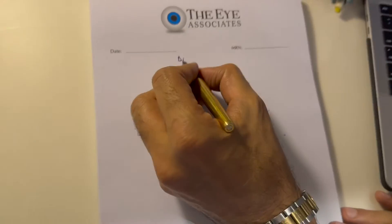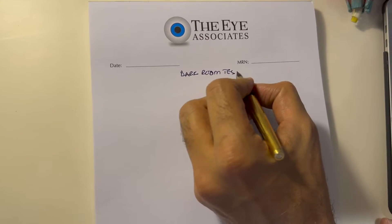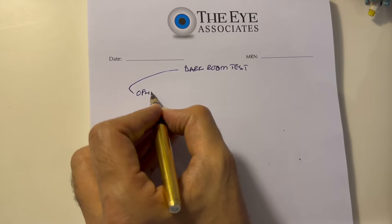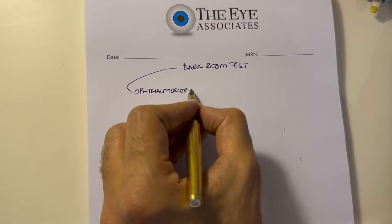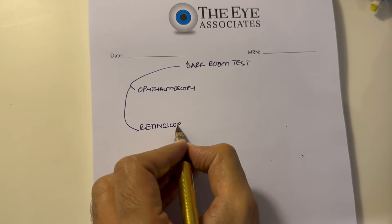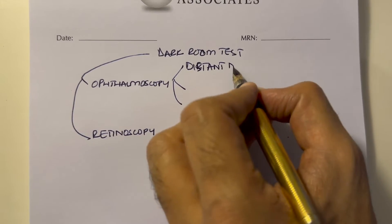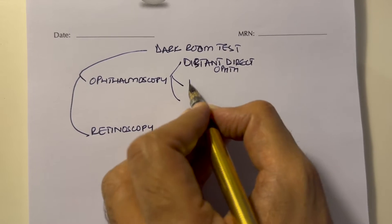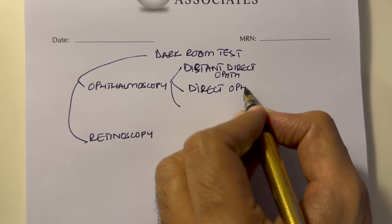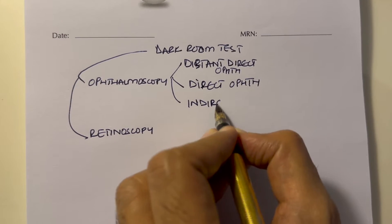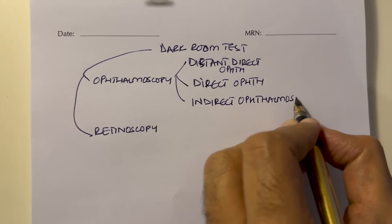This is Aliyaz and you are watching Ophthalmology with MAS. Today we are going to do all the examinations in a darkroom test. The examinations in a darkroom test are basically divided into two: one is ophthalmoscopy and the other is retinoscopy. Ophthalmoscopy has three components: distant direct ophthalmoscopy, direct ophthalmoscopy, and indirect ophthalmoscopy. Today we are going to do indirect ophthalmoscopy, which is a component of the darkroom test.